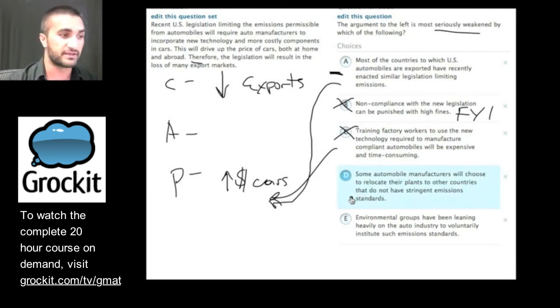How about D? If we add D as a premise, if it's also true that some automobile manufacturers will choose to relocate their plants to other countries that do not have stringent emission standards. In addition to that, the price of cars will go up. Let's hold on to this one. How about E? Environmental groups have been leaning heavily on the auto industry to voluntarily institute such emission standards. If we added this, does it weaken the notion? It doesn't seem to have anything to do with it. It seems like another FYI.